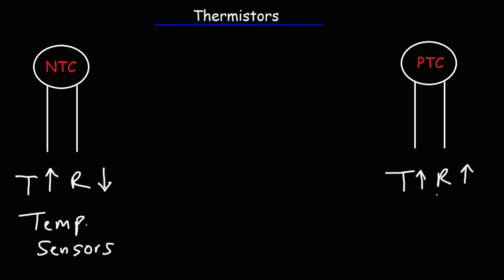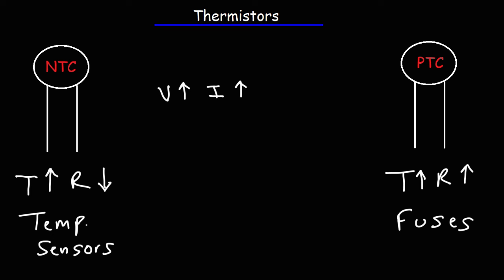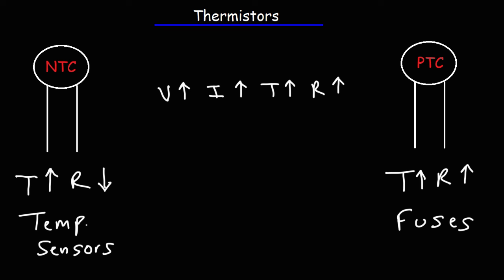The PTC thermistor has applications in fuses. If too much current flows in a circuit, a regular fuse may blow and need replacement. But using a PTC thermistor, it acts as a resettable fuse — you don't have to replace it. If the voltage across the resistor is too high, the current will be high, which heats up the resistor. For the PTC thermistor, when the temperature goes up, the resistance goes up, and when the resistance goes up at a certain voltage, the current goes back down. So the PTC thermistor limits the current by increasing resistance when it gets hot, then bringing the current back down.